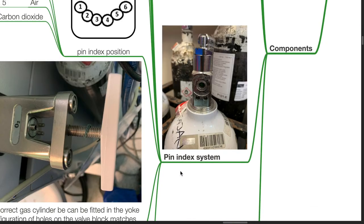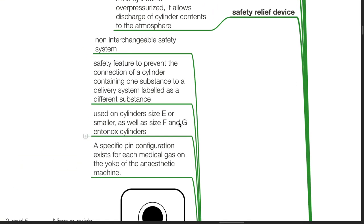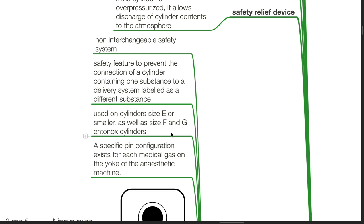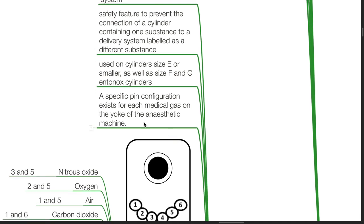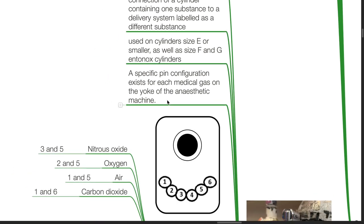Pin index system is a non-interchangeable safety system. It is a safety feature to prevent the connection of a cylinder containing one substance to a delivery system labeled as a different substance. Used on cylinders size E or smaller, as well as size F and G and Entonox cylinders, a specific pin configuration exists for each medical gas on the yoke of the anesthetic machine.